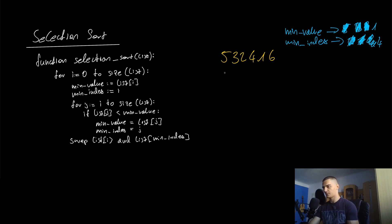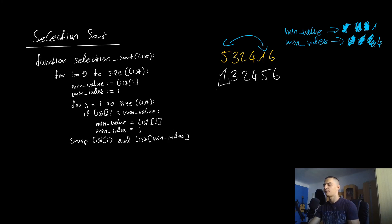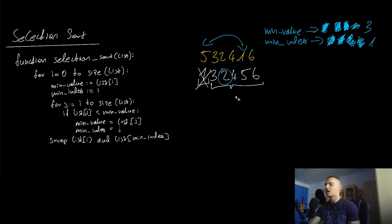After the inner loop we execute swap(list[i], list[min_index]) — swapping index zero with index four — so one and five are swapped. The list becomes one, three, two, four, five, six. We then increment i by one, ignoring the sorted first element, and repeat the whole process: set the new minimum to list[i], scan the remainder, and swap until the list is fully sorted.